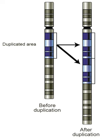Duplications of oncogenes are a common cause of many types of cancer. In such cases, the genetic duplication occurs in a somatic cell and affects only the genome of the cancer cells themselves, not the entire organism, much less any subsequent offspring.